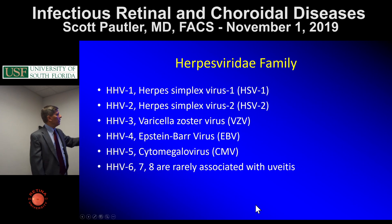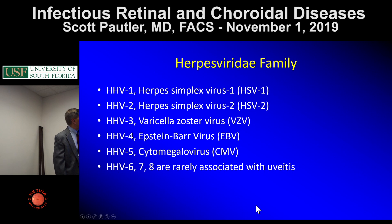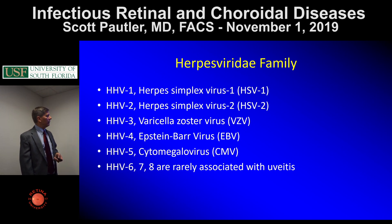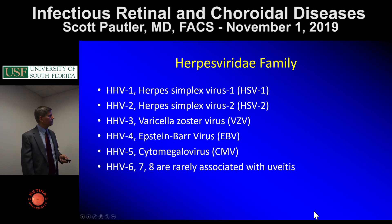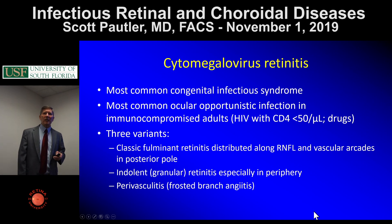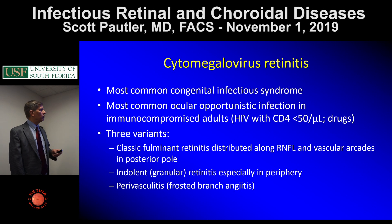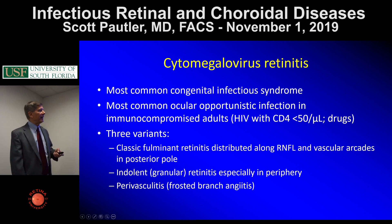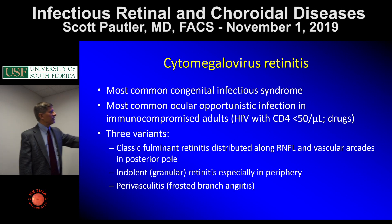We're going to start with the herpes group, which has a lot of different subtypes: simplex, varicella zoster, Epstein-Barr, cytomegalovirus. The other HHV human herpes virus group members aren't often associated with uveitis. Cytomegalovirus is the most common congenital infectious syndrome and the most common opportunistic infection. If you have somebody who's HIV positive or on immunosuppressives and you see a retinitis, think cytomegalovirus.